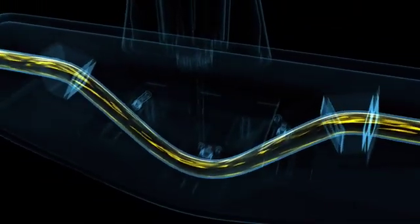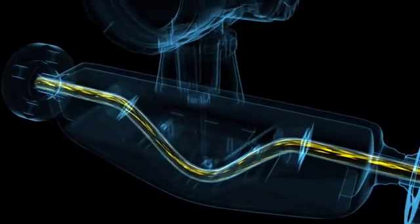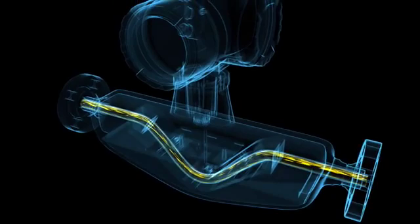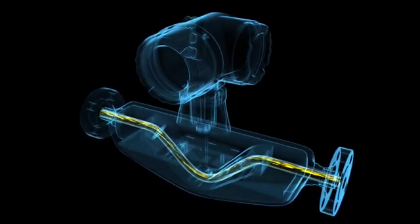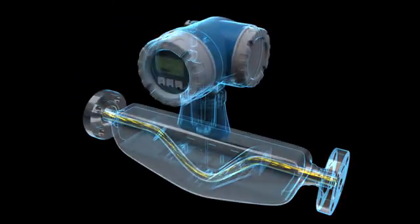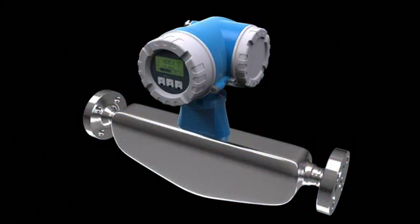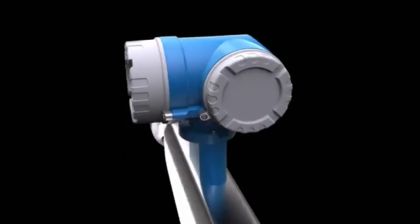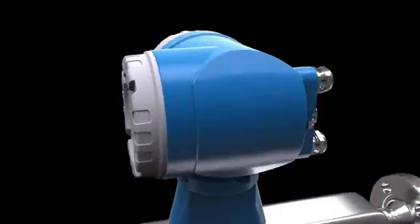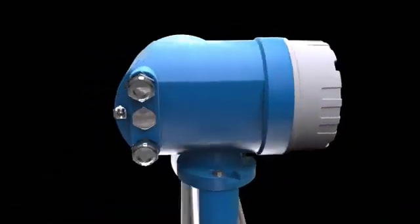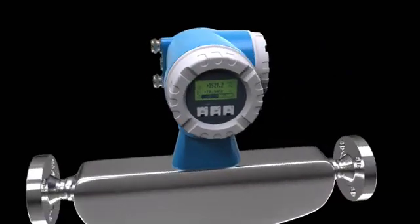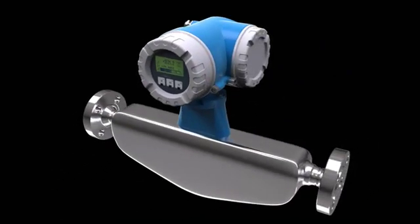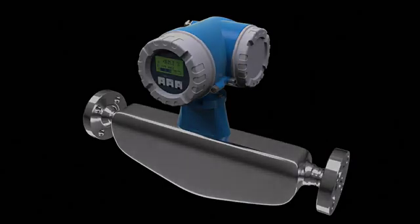Endress+Hauser has continuously revolutionized and perfected Coriolis flow measuring technology in numerous innovative systems. This measuring technology is unique as it's the only way multiple process variables such as mass flow, volume flow, density, temperature, and even viscosity can be measured simultaneously in pipelines.